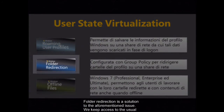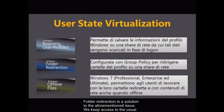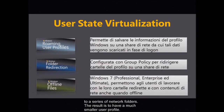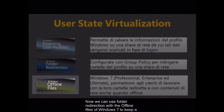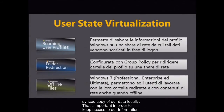Folder redirection is a solution to that issue. We keep access to the usual folders for documents, images, and so on, but they are redirected in a transparent way to a series of network folders. The result is a much smaller user profile. We can use folder redirection with the offline files of Windows 7 to keep a synced copy of our data locally — that's important in order to keep access to our information when we are offline.